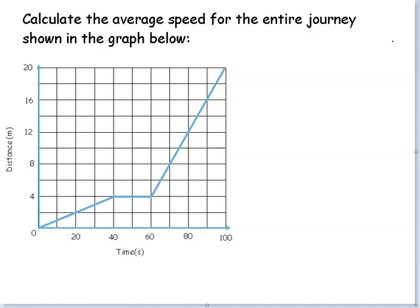This graph says calculate the average speed for the entire journey shown in the graph below. Speed on the distance-time graph is a gradient, but this is like an average speed for the entire journey. We can't use a gradient to work that out.